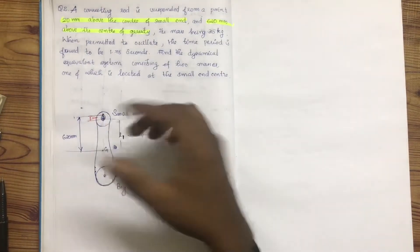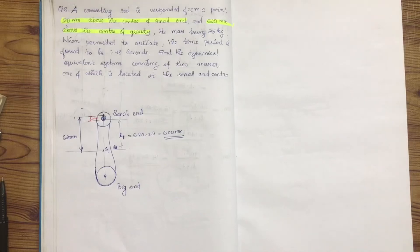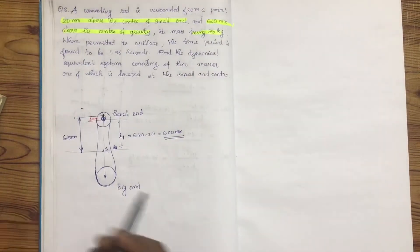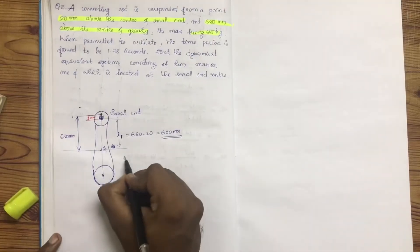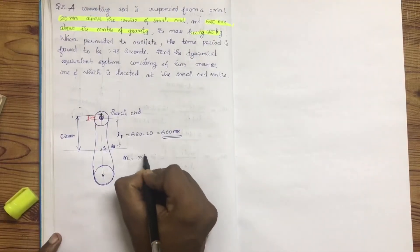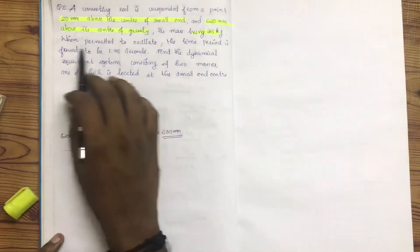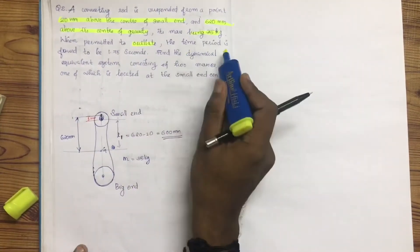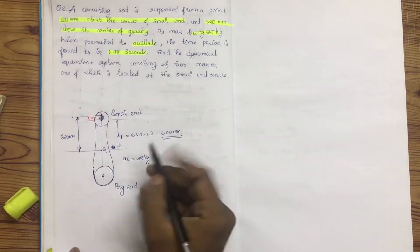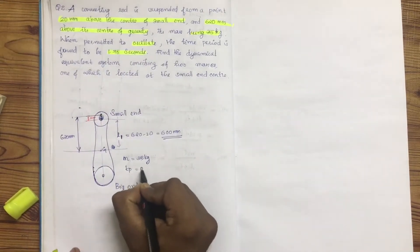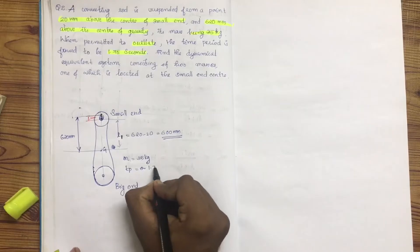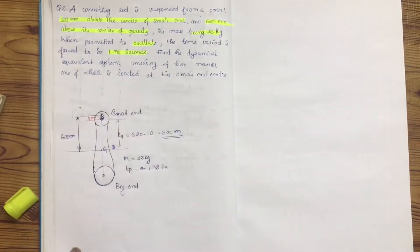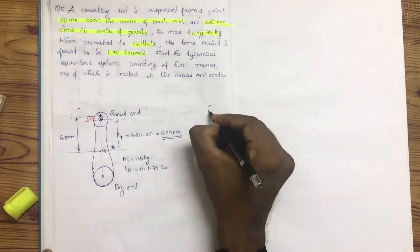The mass is equal to 35 kg. When permitted to oscillate, the time period is found to be 1.78 seconds. Find the dynamically equivalent system with two masses m1 and m2.